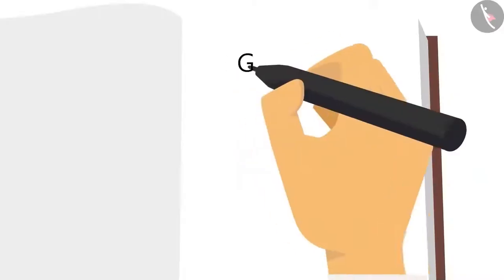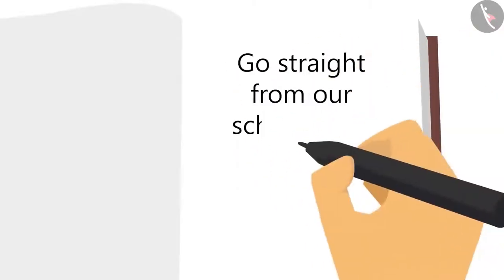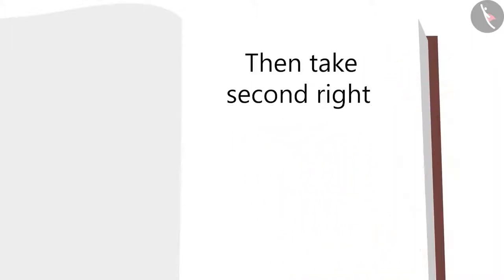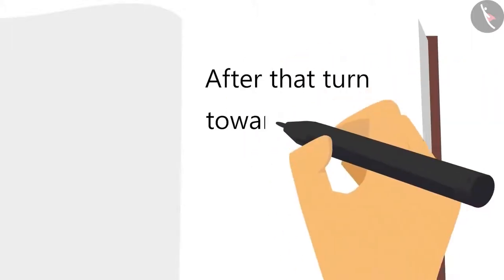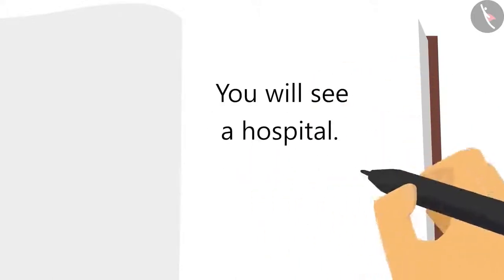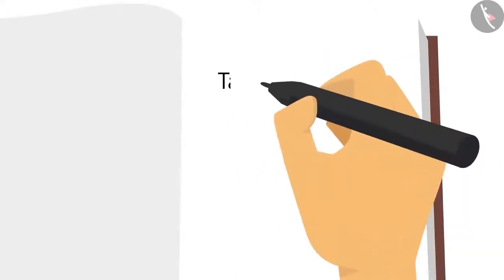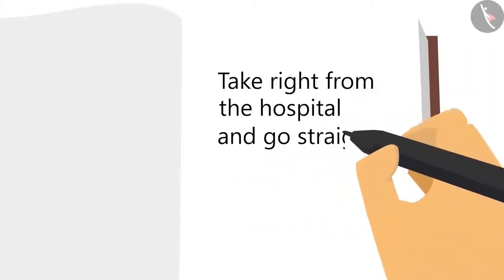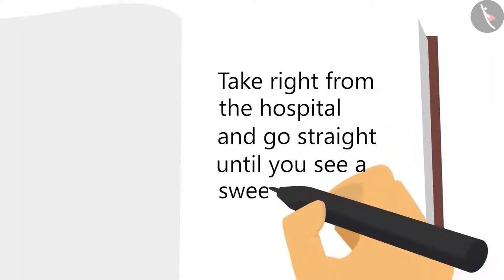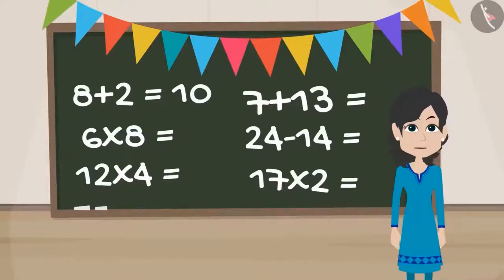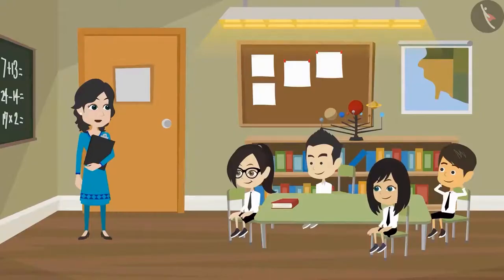Go straight from the school gate, then take the second right. After that, turn left and go straight. You will see a hospital. Take right from the hospital and go straight until you see a sweet shop. My home is right in front of it. Now I am leaving — be there at 6 o'clock.